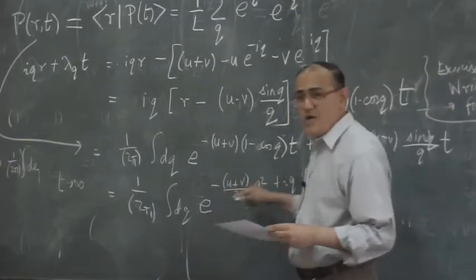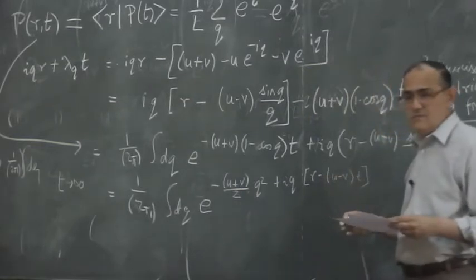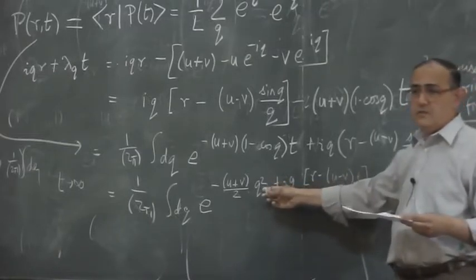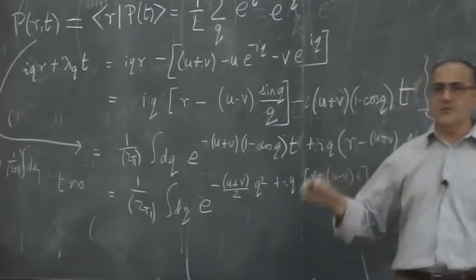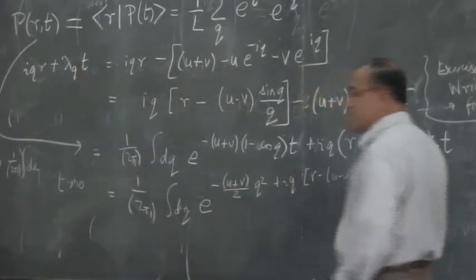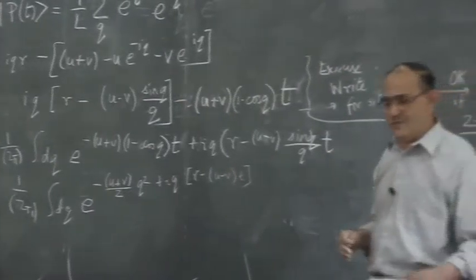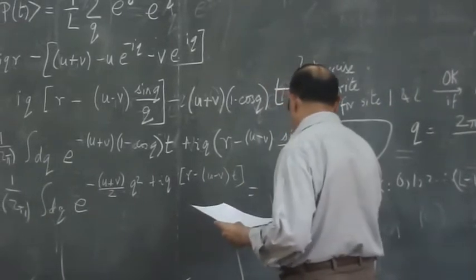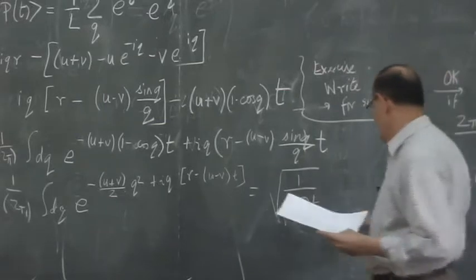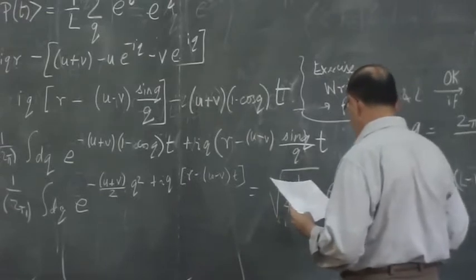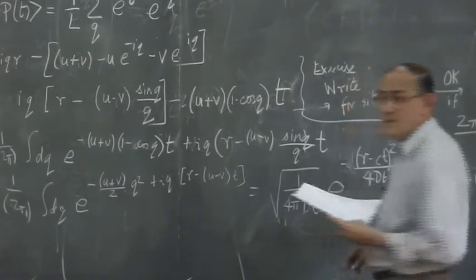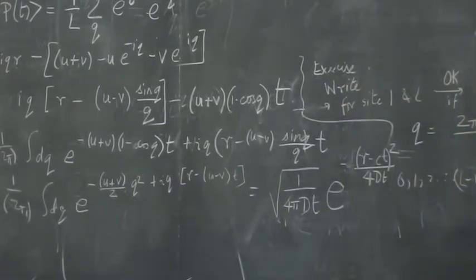Now suppose, we need not suppose but suppose we suppose that we are interested in large times. So we are interested in large times, t becomes large. What happens? Look at the integral. This is iq, it doesn't do much. But look at this term. So this is something negative times t. If t becomes large, this will go to 0 unless this thing that multiplies it is very small. When will it be small? It will be small if q is small. Therefore, in the limit of large t, you are strictly justified, this is not an approximation, in making a small q expansion.